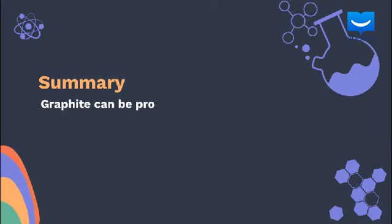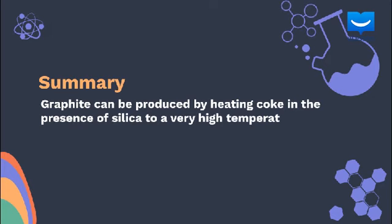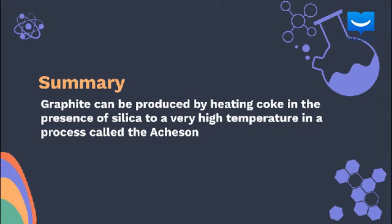We have now come to the end of this very short lesson. Our takeaway from this lesson is that graphite can be produced by heating coke in the presence of silica to a very high temperature, in a process known as the Ackeson process. In our next lesson, we will contrast the properties and uses of diamonds and graphite.